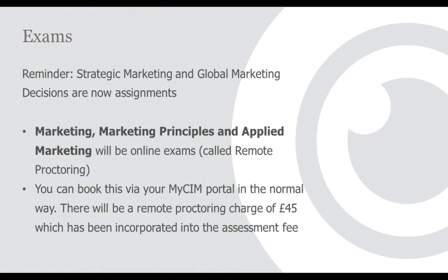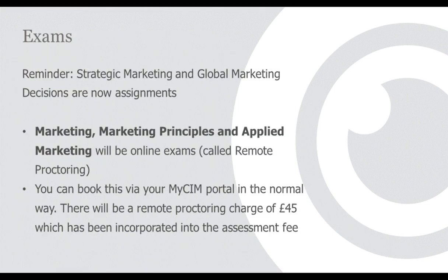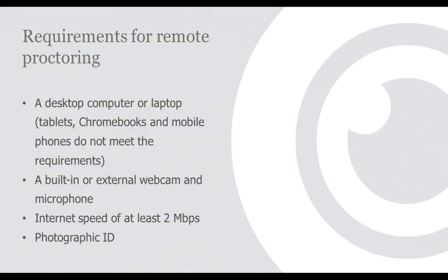That leaves three modules still examined: marketing, marketing principles, and applied marketing. These have now become online exams called remote proctoring — which is simply an online invigilation system. You book these via your My CIM portal. There is a remote proctoring charge of £45, though if your April exam was forcibly moved due to CIM cancelling exams, you will be moved to online exams free of charge for July.